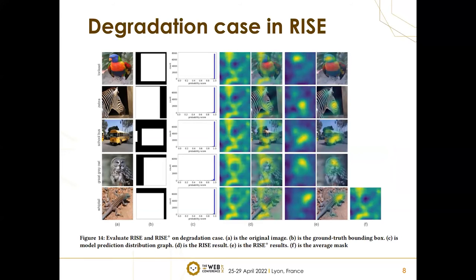Especially, we found a degradation case in RISE, which means that no matter which image is to explain, RISE gives almost the same saliency map as explanations. Those similar saliency maps shown in D have high similarity with the average mask, which is combined of all masks together with same weights shown in F. In this case, our approach shown in E has a significant improvement over RISE. The reasons for the degradation case are analyzed in the paper.